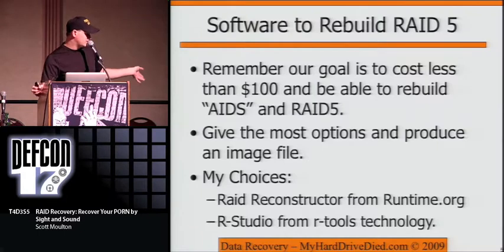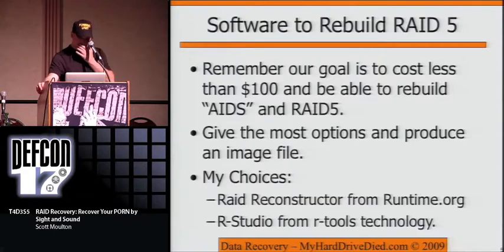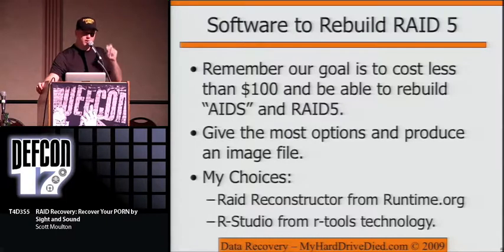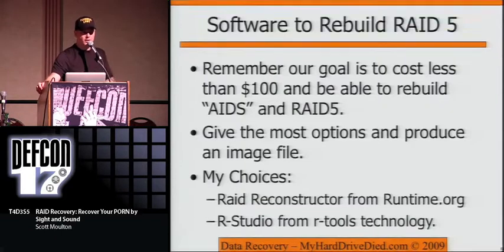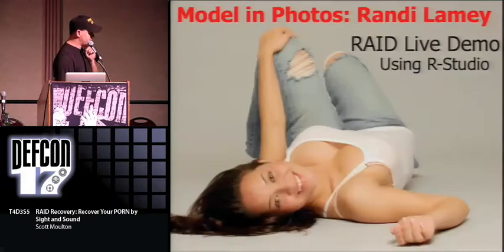The trick with RAID Reconstructor is its entropy scoring. If you see 'OS equals 4' in the results column, those are the ones to try — out of 70-something combinations, it'll tell you which four or five have the highest entropy. Those are the ones to test. But I'm going to show RStudio for the demo. RStudio is a great buy because it does all the file systems except XFS and ZFS, including macOS — so you can typically do everything at once.